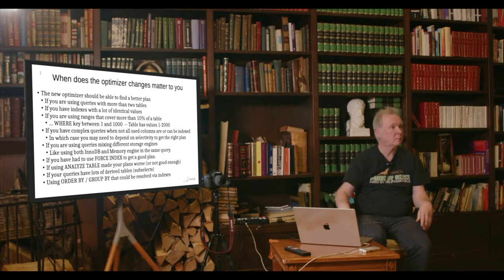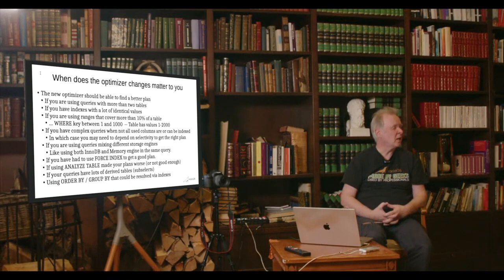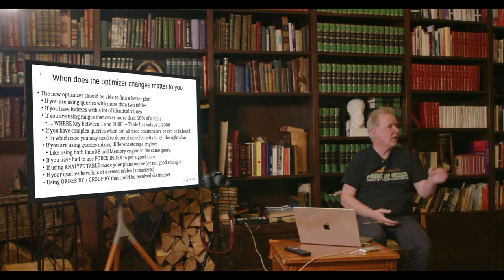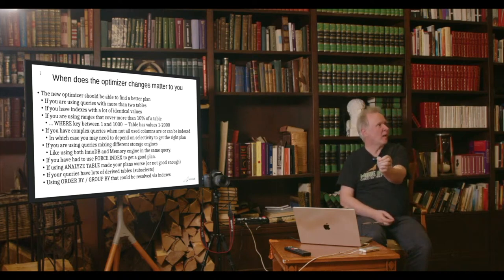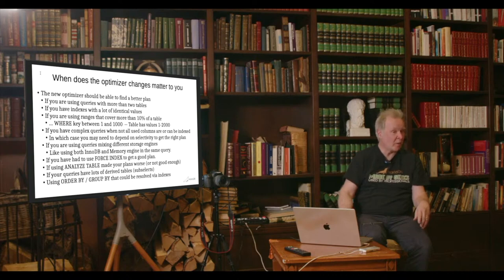Thank you, Monti. Now there are 15 minutes for questions. I'll start with the thunder question again: is it a fair estimate that out of 100 queries roughly 10 will be affected, and hopefully 9 out of those 10 improved? I think there are about 20,000 queries in the test suite roughly, and some thousands had changed — but usually it was just EXPLAIN output because statistics changed. If you look at actual query plan changes, it was a couple of hundred, and I went through almost every single one of those, and as far as I can tell, not a single one was worse.